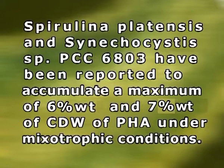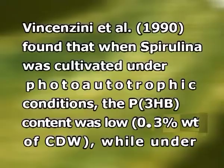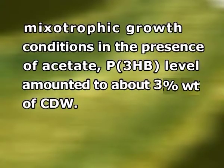Spirulina platensis has been reported to accumulate a maximum of 6-7% of CDW of PHA under mixotrophic conditions. Poly-3-hydroxybutyrate (P3HB) is the most common type of PHA synthesized by most bacteria and also the most common type synthesized by cyanobacteria. Wiesensee et al. (1990) found that when Spirulina was cultivated under photoautotrophic conditions, the P3HB content was low at about 0.3 weight percent of CDW, while under mixotrophic growth conditions in the presence of acetate, the P3HB level accounted to about 3% of the CDW.